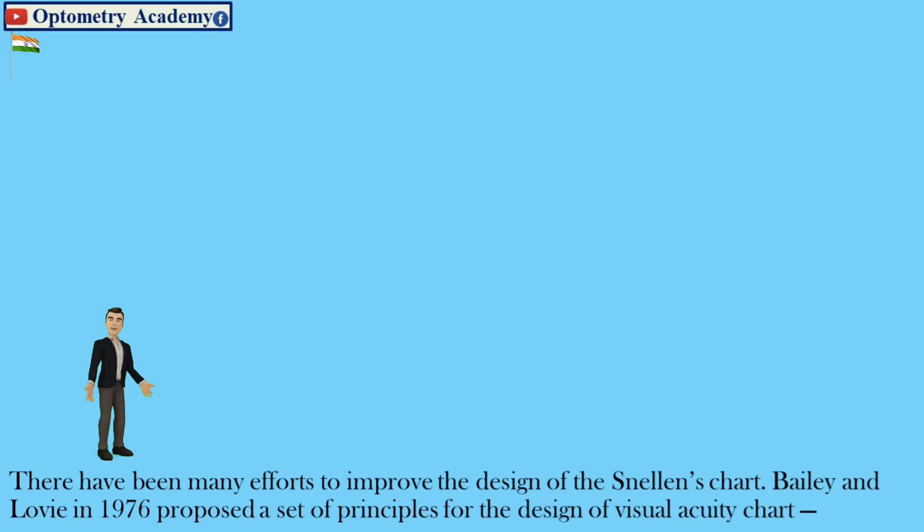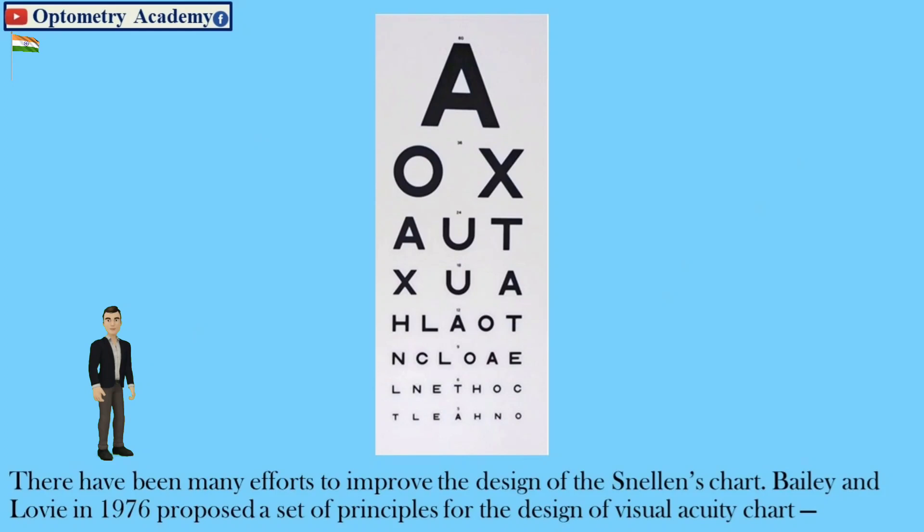There have been many efforts to improve the design of the Snellen chart. Balian Lobby in 1976 proposed a set of principles for the design of the visual acuity chart.